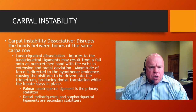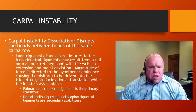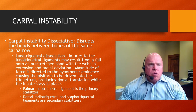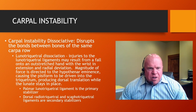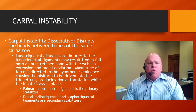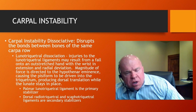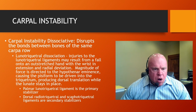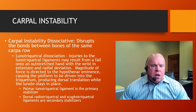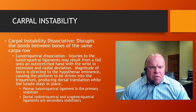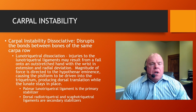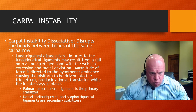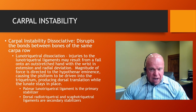Another of the dissociative carpal instability patterns as described by the AMA Guides is the lunotriquetral dissociation. With lunotriquetral dissociation, we're moving more towards the ulnar aspect of the hand, so one of the cardinal symptom patterns described by these examinees will be ulnar-sided hand pain — whereas with scapholunate dissociation, the pain is described as more radially oriented.